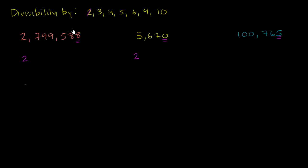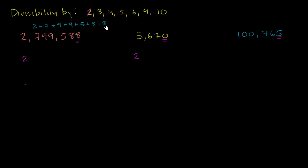Now let's work through the 3s. To figure out if you're divisible by 3, you add up all the digits and figure out if the sum is divisible by 3. So for the first number: 2 plus 7 plus 9 plus 5 plus 8 plus 8. That gives us 9, 18, 27, 32, 40, 48. And 48 is divisible by 3. If you're not sure, add those digits: 4 plus 8 equals 12, which is clearly divisible by 3. And 1 plus 2 equals 3, so this number is divisible by 3.